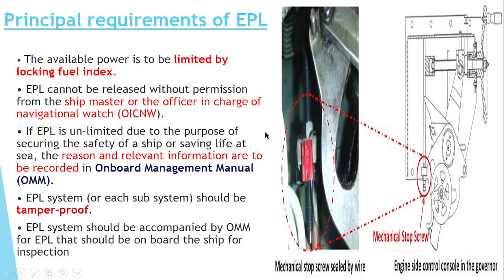As the engine is locked, the fuel index is locked. It should not be tampered by anybody unless the situation arises such that it needs to be tampered. The EPL cannot be released without permission from the ship master or the officer in charge of a navigational watch. If you want to increase the RPM above the EPL limit, you need to take permission from the ship master or officer in charge of a watch.